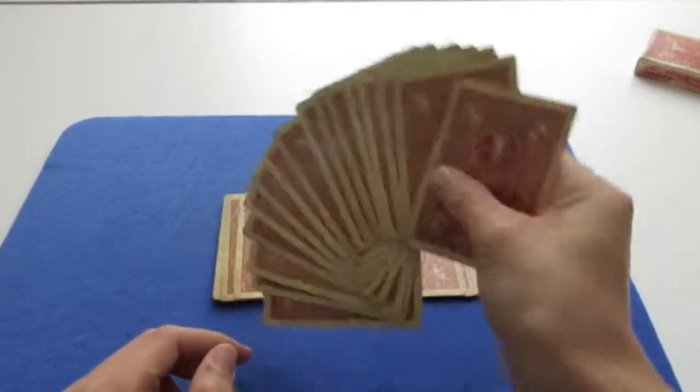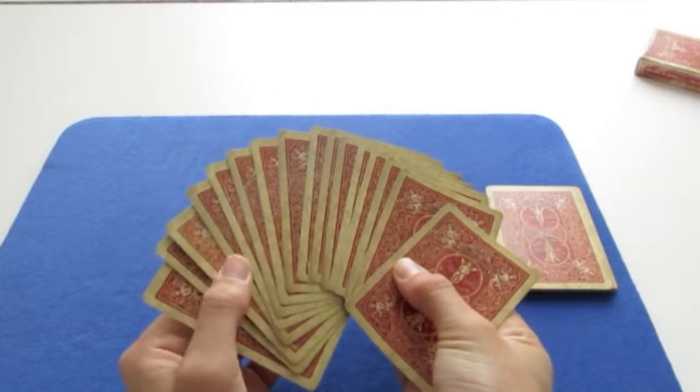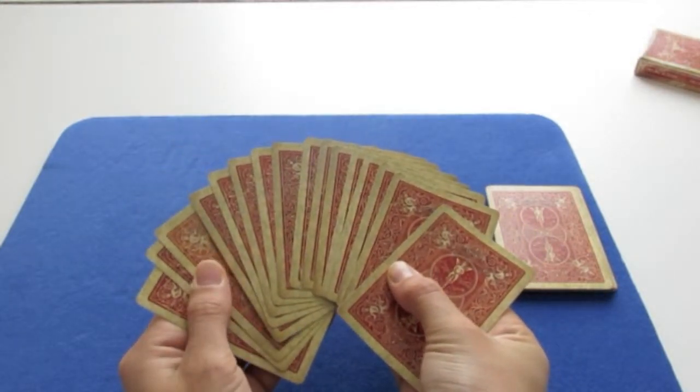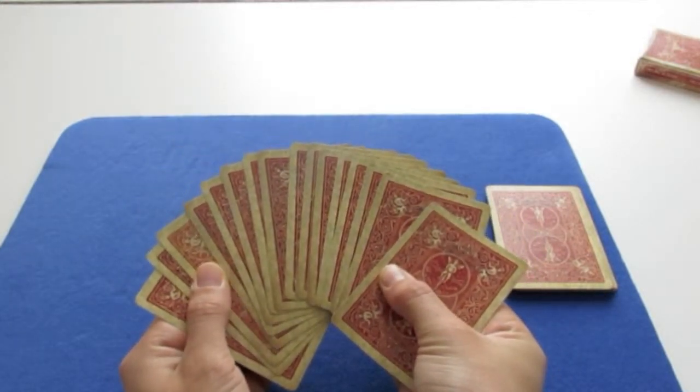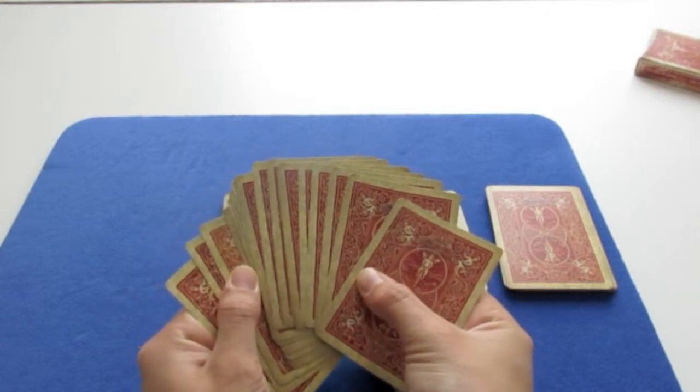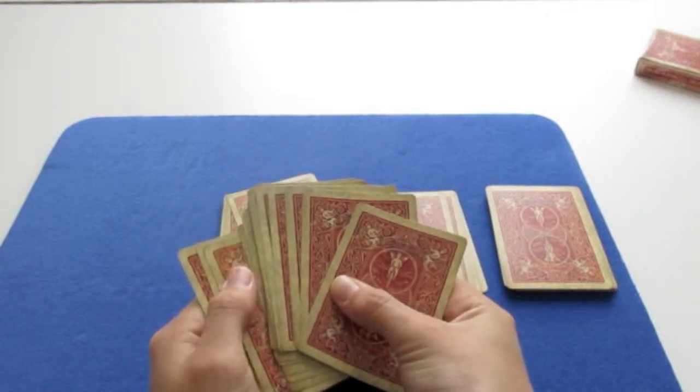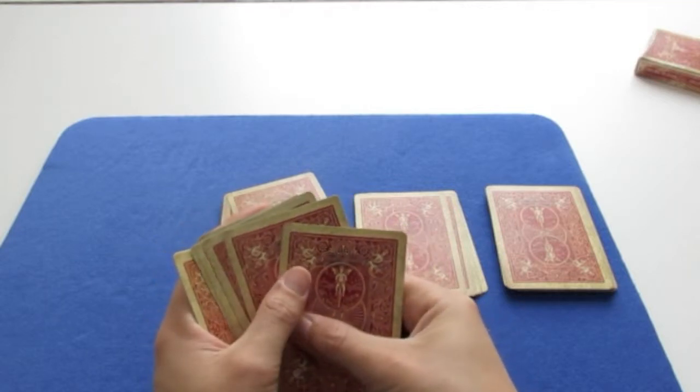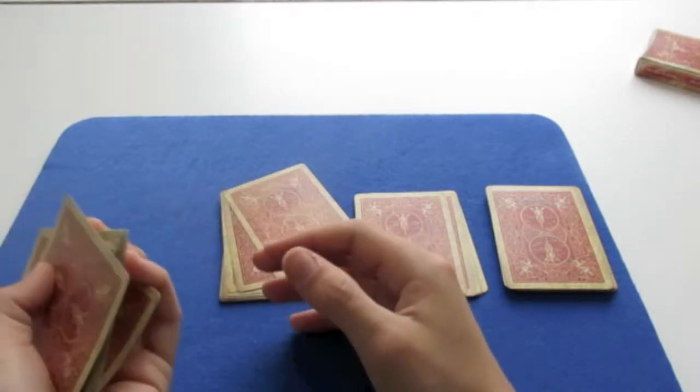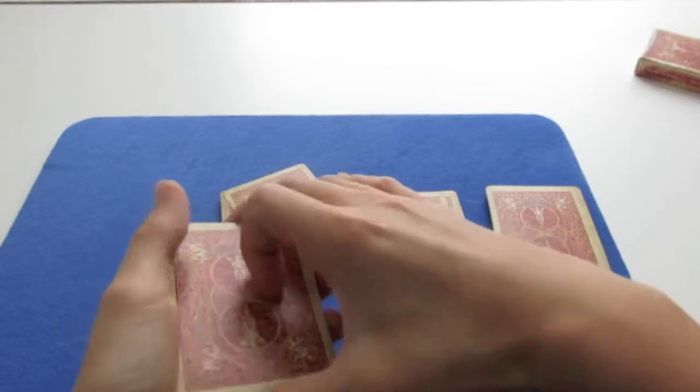And while spreading through, you're going to count 3 cards from the bottom, knowing that these cards are the aces. Place your thumb there, but make it look natural. And then you're going to square back up these cards at the same time. Push on top so that you can catch pinky break.